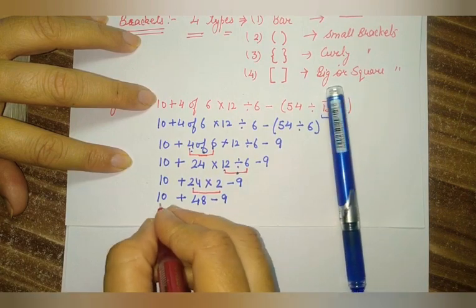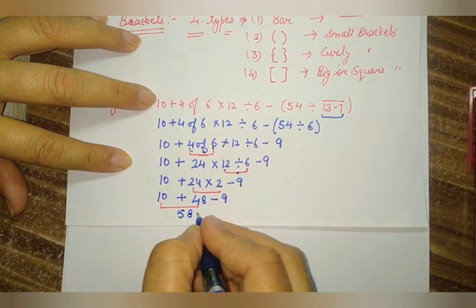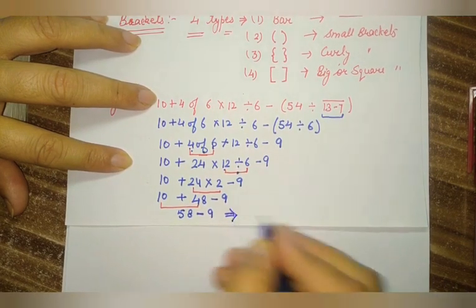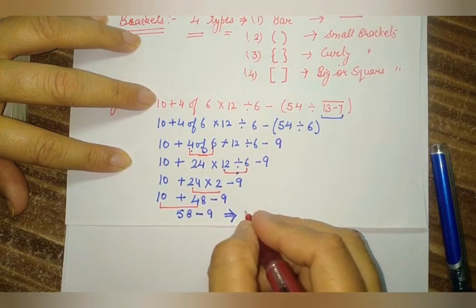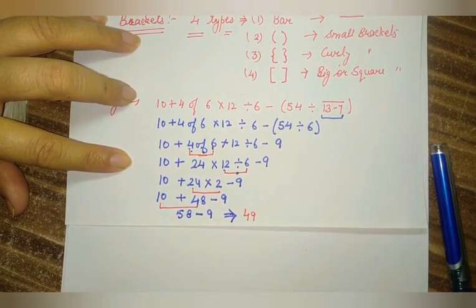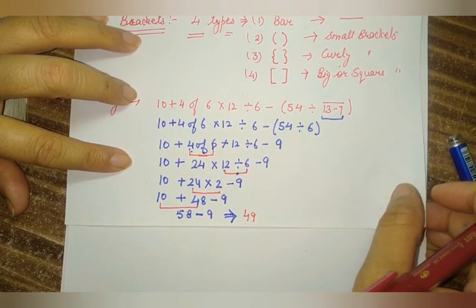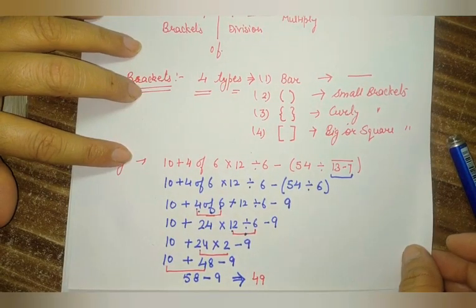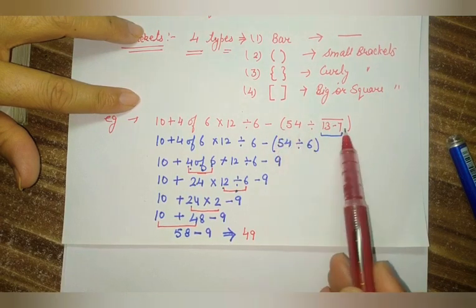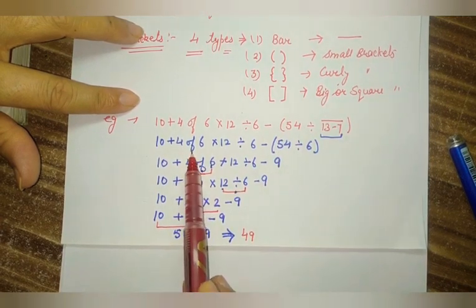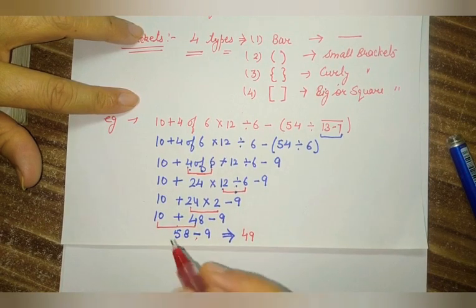That is 58 minus 9 equals 49. The final answer is 49. So students, we solved this example by using the rule BODMAS: first we removed the brackets — first the bar, then the small bracket — then 'Of', then divide, then multiply, then addition, and at the last, subtraction.